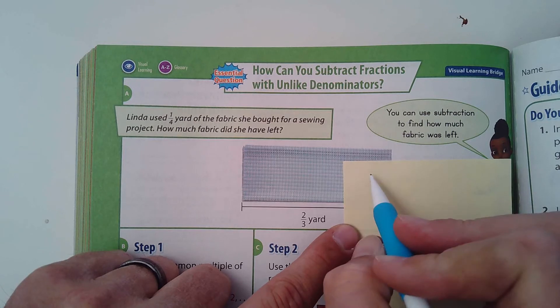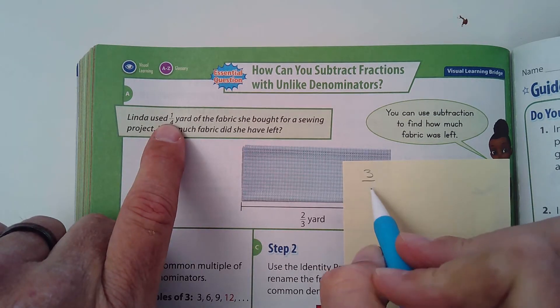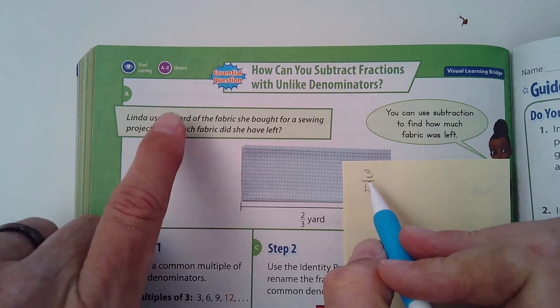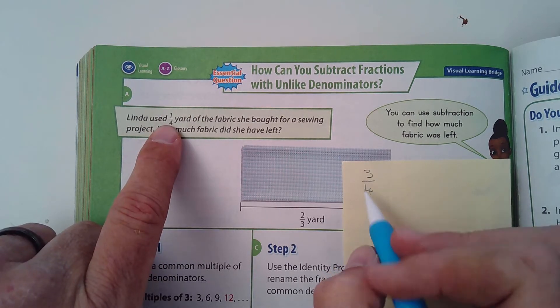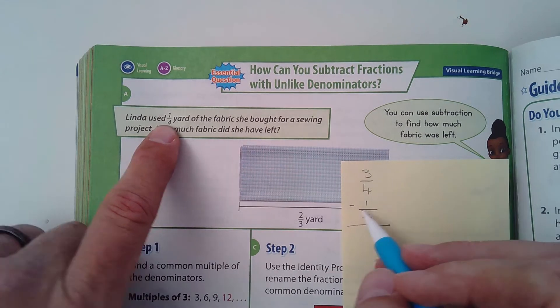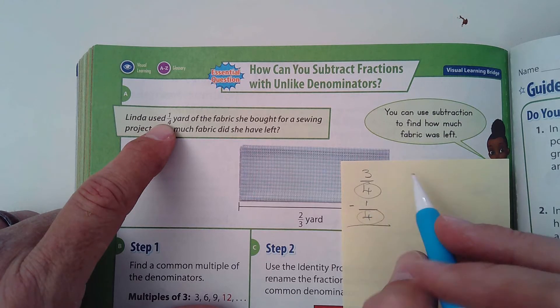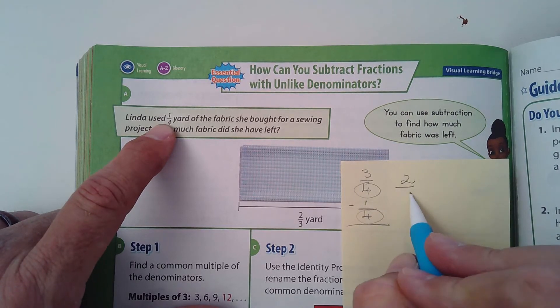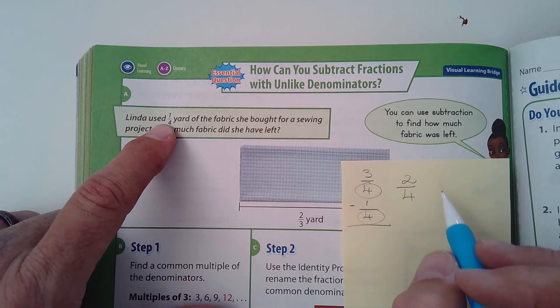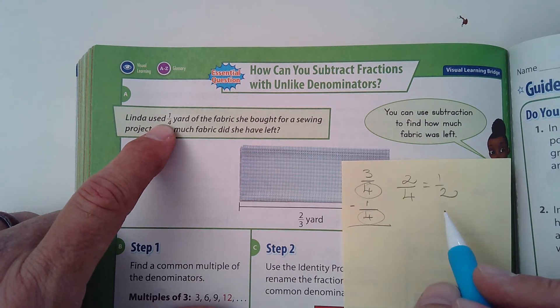So we're going to be subtracting fractions. But before we do this one, look, if I had, let's say I had three quarters and I'm subtracting one quarter. It's easy because the denominators are the same. So I can just subtract one from three and what do I get? I get two quarters or that's the same as one-half. I think you guys can recognize that.